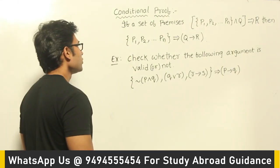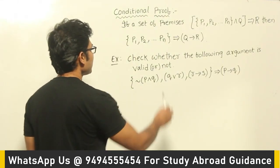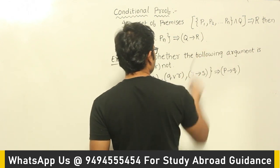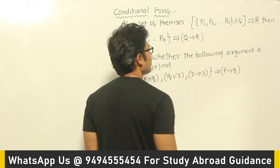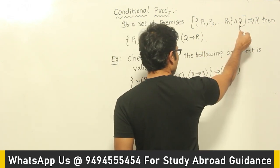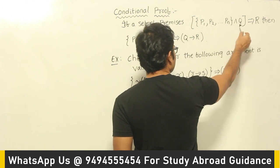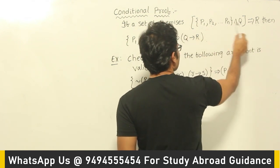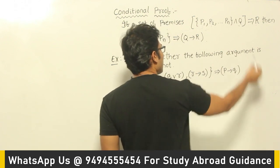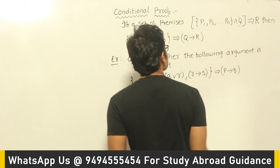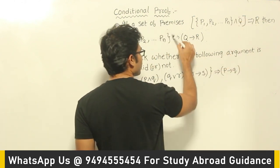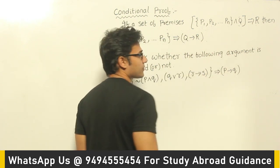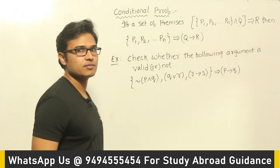Now let's see the conditional proof. It says that if a set of premises p1, p2, p3 along with a premise q give a certain conclusion, then we can write it this way: we can take out the premise q and put it in the conclusion. These two forms are actually equivalent — that is the meaning of the conditional proof.